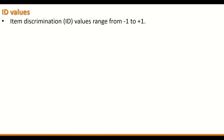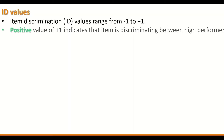The item discrimination values range from minus 1 to plus 1 based on Kelly's equation. A positive value of plus 1 indicates that the item is perfectly discriminating between high performers and low performers.